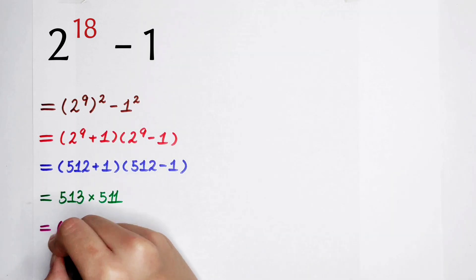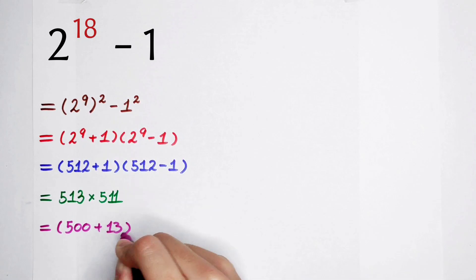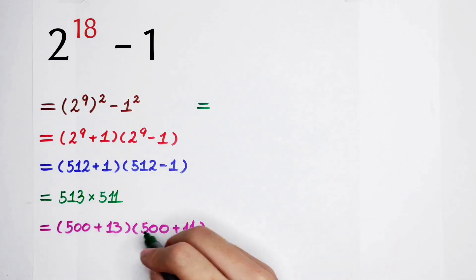513 can be written as 500 plus 13, and 511 can be regarded as 500 plus 11. Our next step is to calculate.